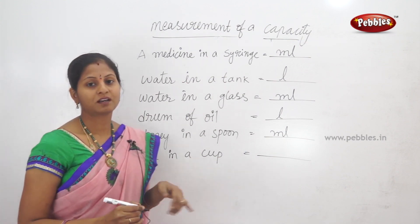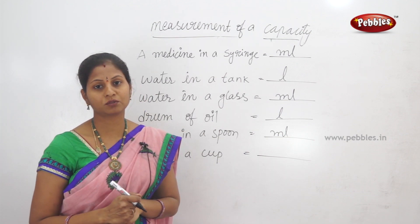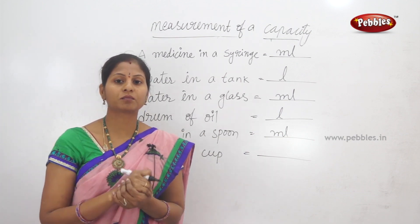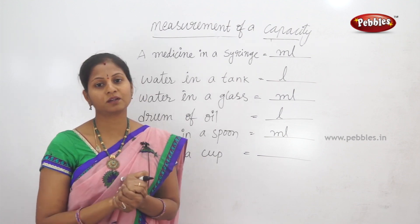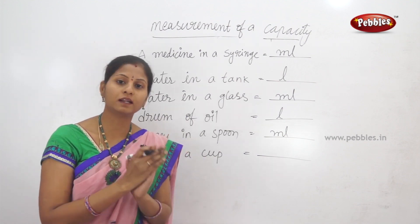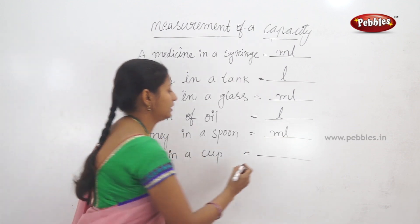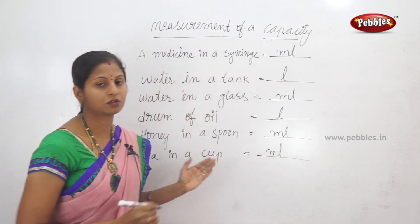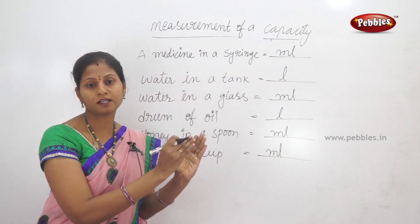Next, tea in a cup. In a daily cup, what kind of quantity is tea? We have a little bit of tea. So less quantity — less quantity is measured in milliliters. Tea in a cup is milliliters. How many milliliters is the tea?